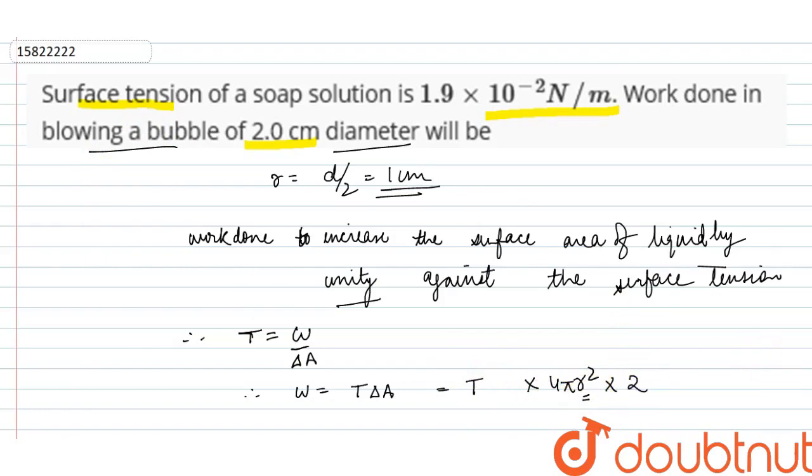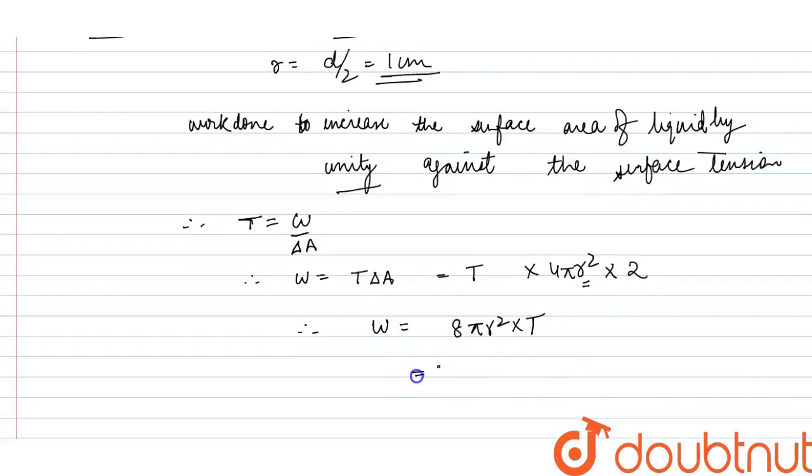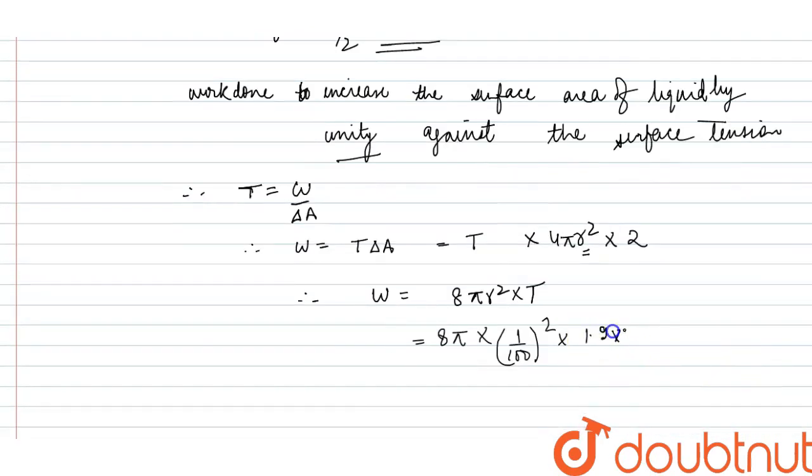So into 2. So therefore, W is equal to 8 pi r square into T. Substituting the values, this is 8 pi, r is 1 by 100 whole square, into 1.9 into 10 to the power minus 2. So which is equal to approximately 15.2 into 10 to the power minus 6 into pi joule. This is the work done.